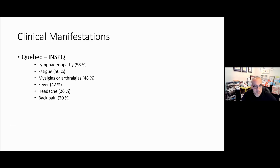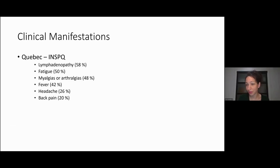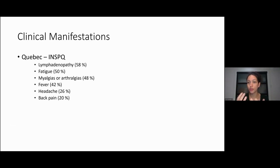Just for lay listeners, myalgias and arthralgias are body aches and joint pains. One thing worth noting is that the atypical sites — genital, perianal — are probably the site of inoculation, given it's suspected that many of these cases are sexually transmitted. The mode that seems most efficient is direct skin-to-skin contact — that's where the virus is inoculated and where you first start to have lesions. But once you have the virus and a viremia, it goes through your bloodstream and you can have systemic symptoms and lesions elsewhere over time.